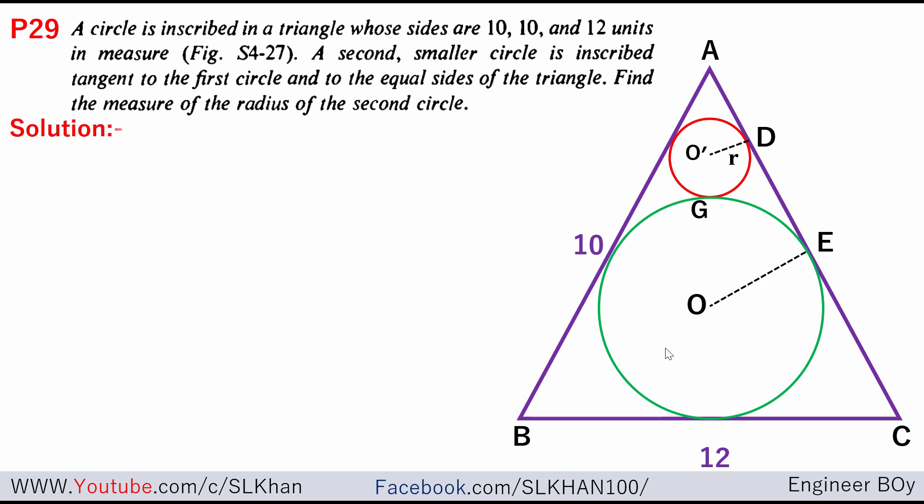Alright, so in the solution, the first thing I want to draw is line AF. Now if you see line O-D and O-E are perpendicular to line AC, that means CF equals CE and that's going to be 6 units.